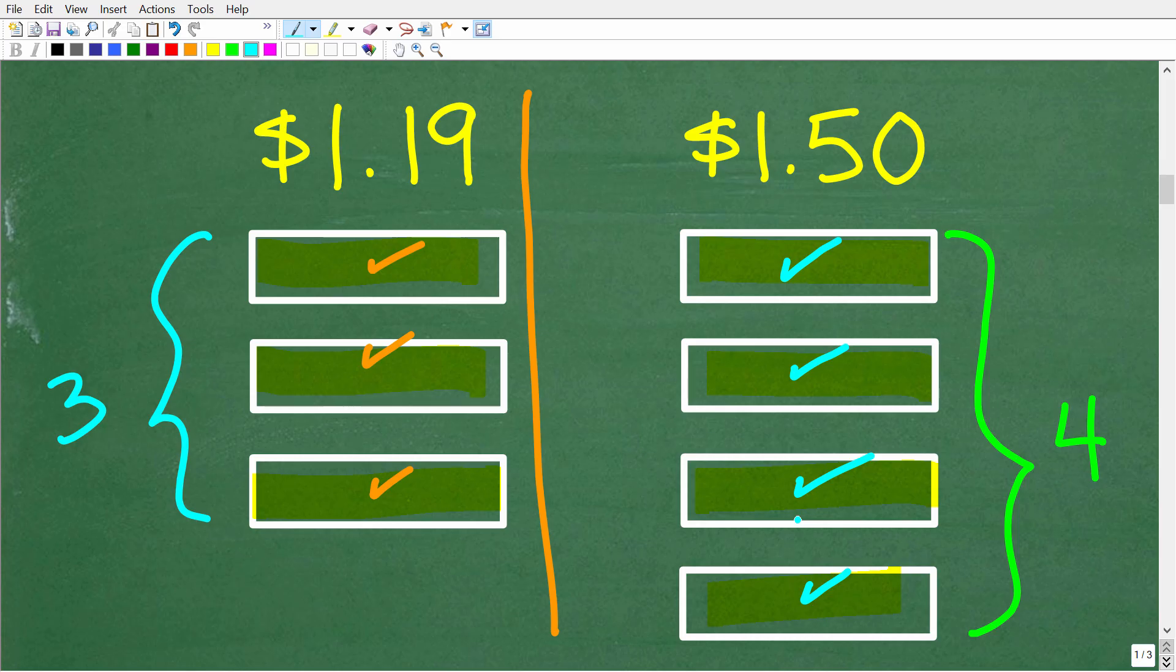So we're talking about simple math here. So over here, if we can get three protein bars for $1.19, what do we need to do to determine the unit cost? So we're talking about division. So it's going to be basically the same. We're going to take this $1.19 and divide it by three. And that will give us the unit cost...